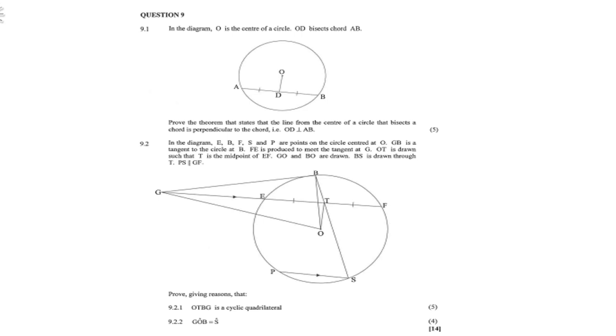And then 9.2, in the diagram, EB, F, S, and P are points on the circle, center O. GB is a tangent to the circle at B. EF is produced to meet the tangent at G. OT is drawn such that T is the midpoint of EF. GO and BO are drawn. BS is drawn through T.